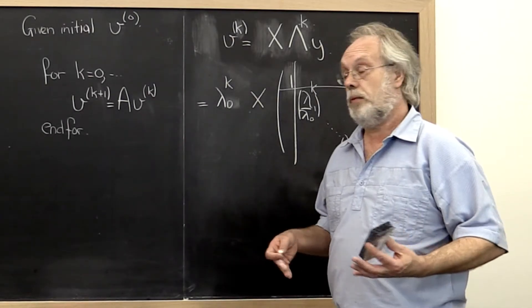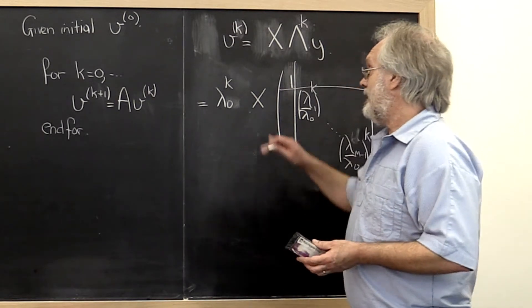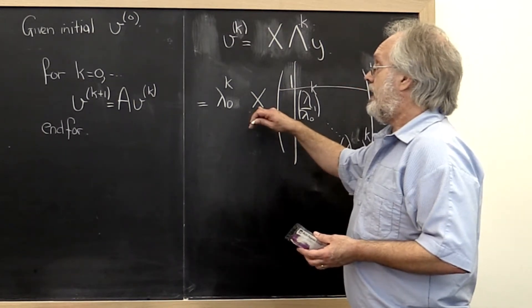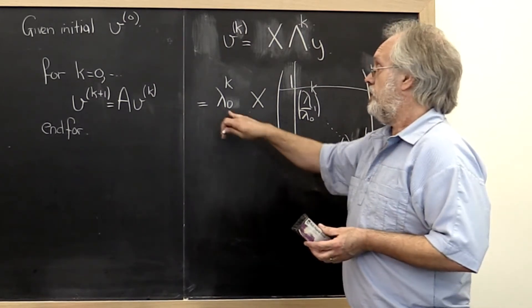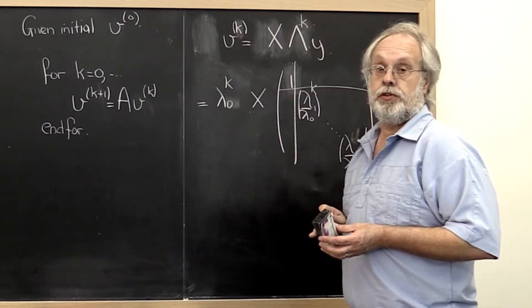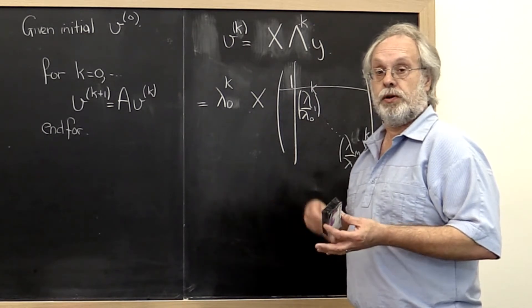Now as mentioned, the problem is that eventually we may end up with a vector that's arbitrarily large or arbitrarily small, depending on whether the magnitude of lambda zero is greater or less than 1.